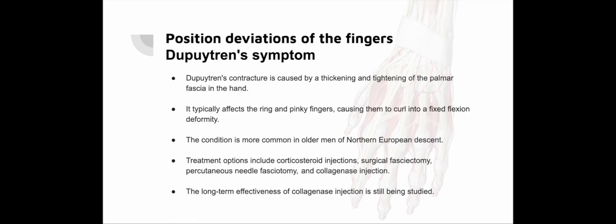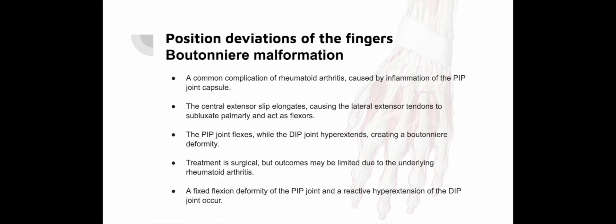Dupuytren's contracture: Dupuytren's contracture is a condition characterized by progressive flexion deformities of the fingers, arising from the proliferation of myofibroblasts in the palmar fascia, predominantly affecting older individuals. It typically presents with fixed flexion contractures of the MCP, PIP and sometimes DIP joints, often initiating in the little and ring fingers. Bilateral involvement occurs in approximately half of cases, with higher prevalence in Northern Europe. Initial symptoms often manifest as fibrous nodules over the pre-tendinous bands in the palm. Treatment options include corticosteroid injections for nodule management, selective fasciectomy as the gold standard surgical approach, percutaneous needle fasciotomy for minimally invasive treatment, and collagenase clostridium histolyticum injections followed by finger manipulation. While the long-term efficacy of collagenase injections remains unclear, it offers a promising alternative treatment modality.